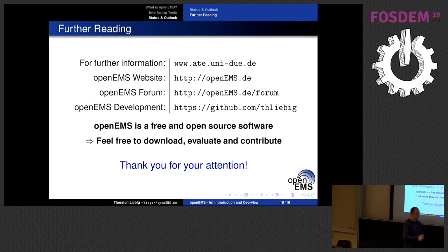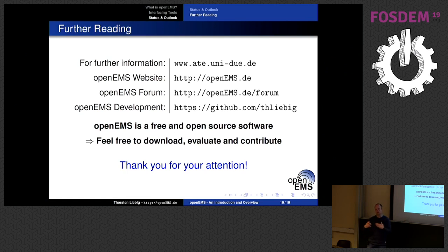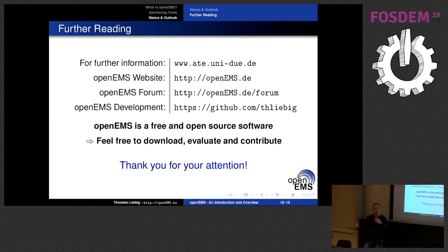On human body models: they are not included in OpenEMS — you must obtain them separately. For example, ETH Zurich has a library of human body models available via contract and NDA for research purposes. Commercial use is more difficult. OpenEMS includes a tool to convert those models into a voxelized HDF5 file that OpenEMS can read. You can also create your own body model in that format.